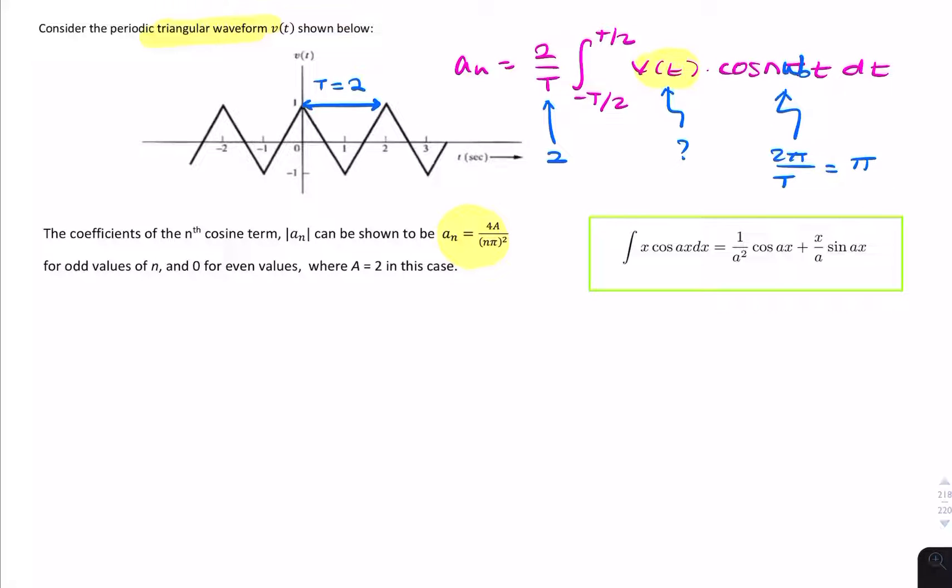And v of t, that expression depends on whether we're looking at this bit, the rising or the falling part. So this is a straight line, so v of t is simply, I can say v equals 2t plus 1, because it has a slope of 2 and it has a y-intercept of 1. And for this falling part, v equals minus 2t plus 1.